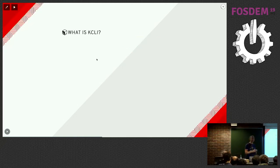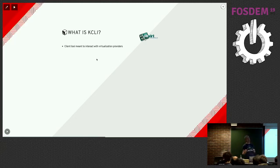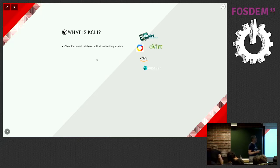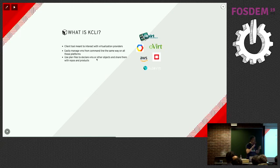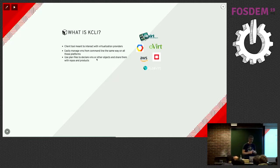What is kcli? It's basically a client tool meant to interact with virtualization providers. It started with libvirt but evolved into something that also handles KubeVirt, GCP, AWS, oVirt, and OpenStack. The idea is to easily manage VMs from the command line the same way regardless of the platform. There's also a construct called plan files, which allows you to declare VMs and other objects like containers, networks, pools, and disks — and share them using repos and products.